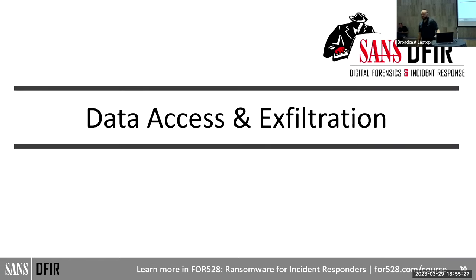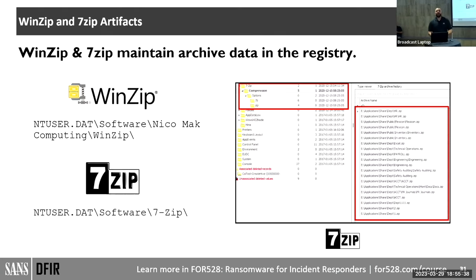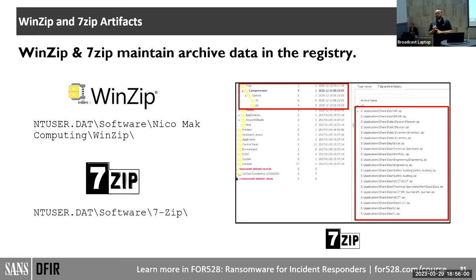Now we move on to data access and exfiltration. Threat actors love to create archives to take data out. They'll use PowerShell's Compress-Archive command — it's built in, they can just use it. If you can monitor for that in your EDR or through event ID 4103 module logging, you'll catch it. They'll also bring in WinZip and 7-Zip.